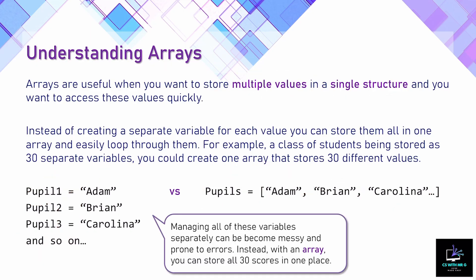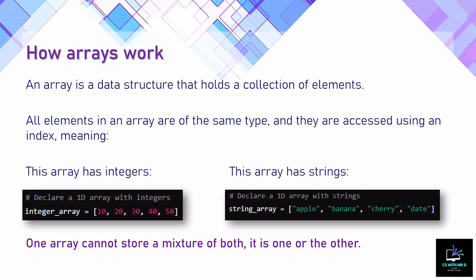Managing all of these variables separately would become very messy and could potentially lead to errors and be difficult to follow. Instead, an array can store all 30 items in one place. One thing we need to mention is that an array stores a collection of elements, and all elements have to be the same type. We haven't discussed data types just yet, but in this example — shown in Python, though the pseudocode is very similar — you can see on the left in pink we've got numbers, and on the right we've got words, or strings.